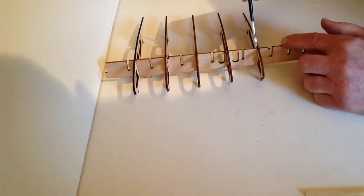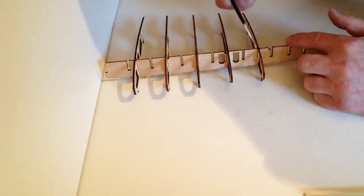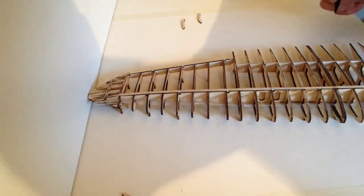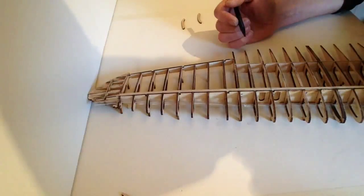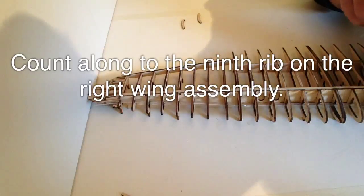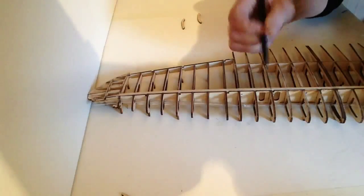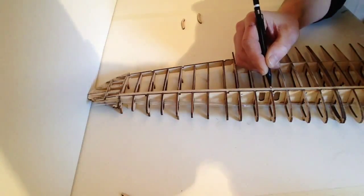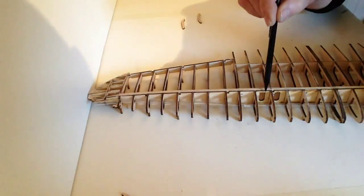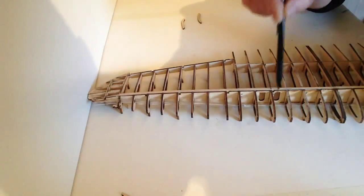Take your right wing assembly and count along to the 9th rib: 1, 2, 3, 4, 5, 6, 7, 8, 9, and just mark off. So that's the 9th. For another observation, it's the one that's in between the two holes at the front of the wing strap.